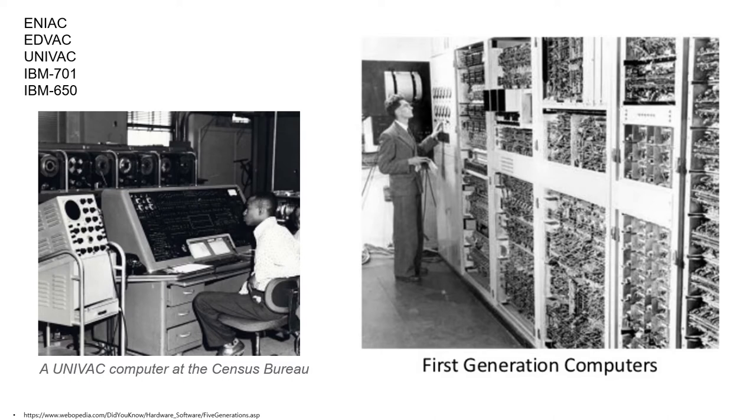The first generation computers relied on machine language, the lowest level programming language understood by computers, to perform operations and they could only solve one problem at a time. Input was based on punched cards and paper tape, and output was displayed on printouts. The UNIVAC and ENIAC computers are examples of first generation computing devices. The UNIVAC was the first commercial computer delivered to a business client, the U.S. Census Bureau, in 1951.